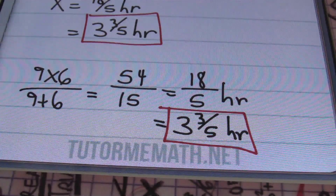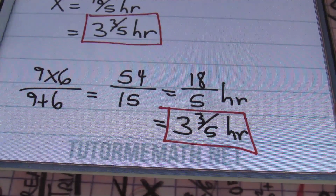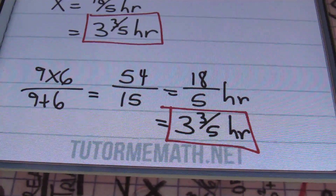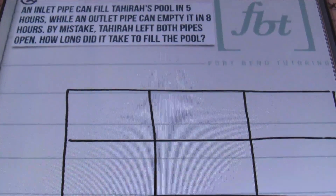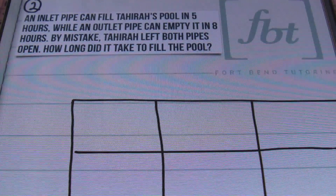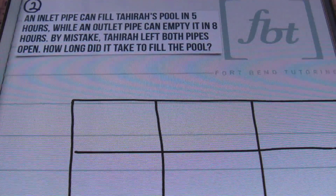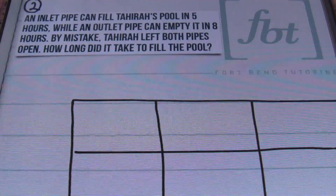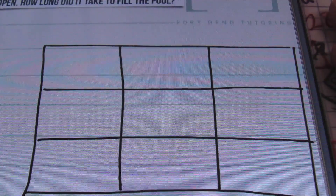The format of that question has to be the same to use this shortcut — and there's your bonus for watching this video. Let's go on to problem number two. An inlet pipe can fill Tahira's pool in 5 hours, while an outlet pipe can empty it in 8 hours. By mistake, Tahira left both pipes open. How long did it take to fill the pool? We're dealing with one pool, so that's going to be the work amount.